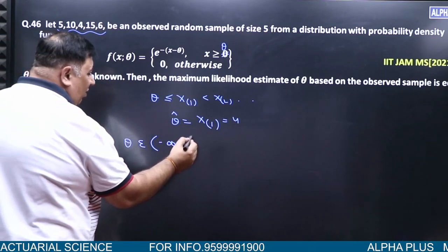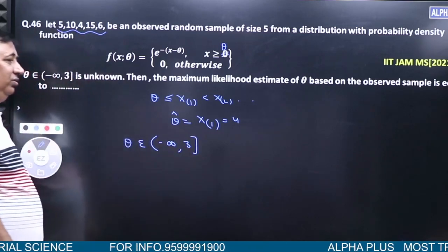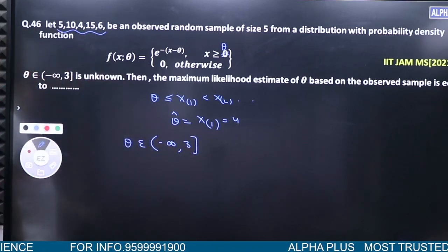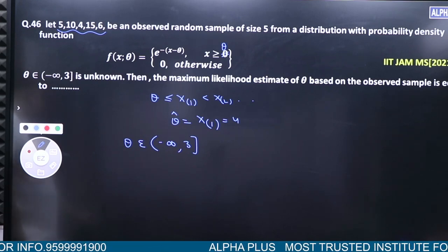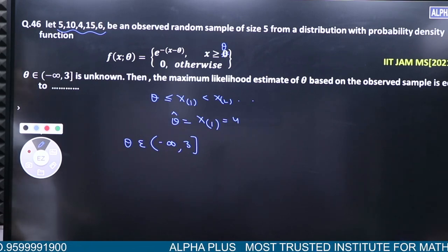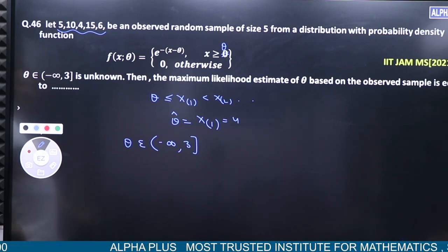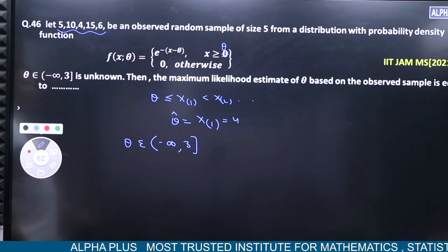Minus infinity will be the maximum. So 3 will be possible. All 4 will be written. Let's see what the range of the function depends on the parameter.